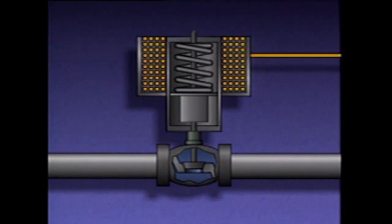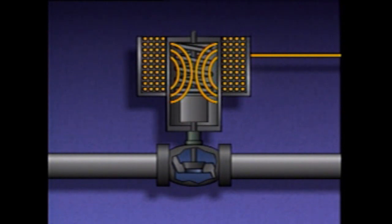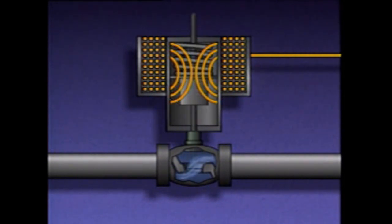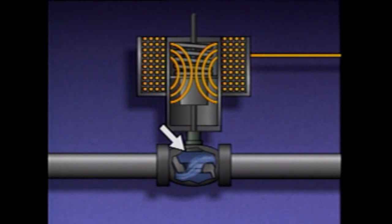When current flows through the wire coil, it creates a magnetic field around the coil, which in effect becomes an electromagnet. The armature, which is a solid metal core, is attracted to the magnetic field. This attraction pulls the armature toward the center of the coil. As the armature moves, it compresses the spring and moves the stem, opening the valve in the process.